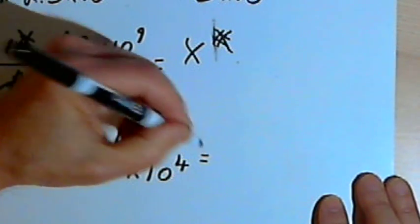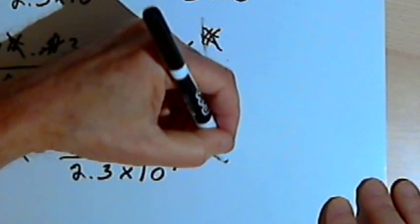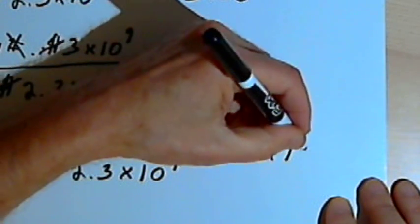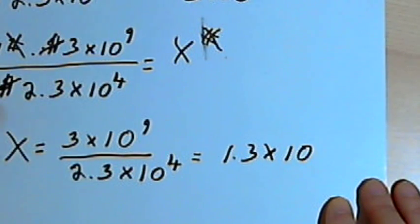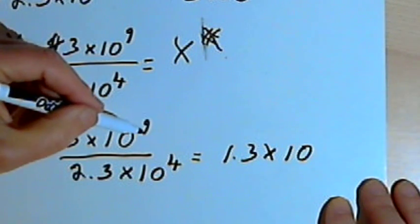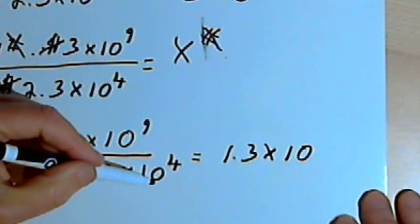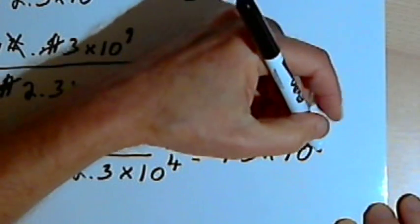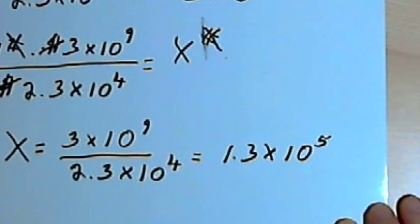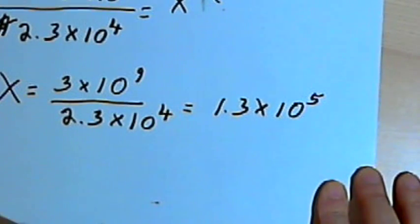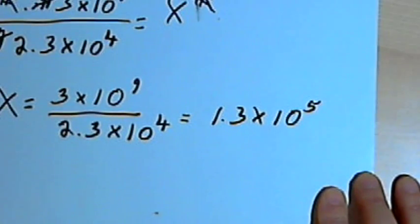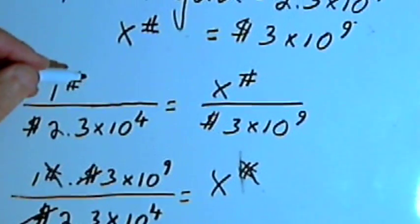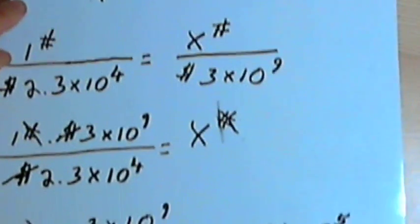So now I can take that fraction and turn that into 1.3 times some power of 10. And let's see, the power of 10 will be... I've got 10 to the ninth in the numerator, 10 to the fourth in the denominator. So I'll subtract that 4 from the 9 and get 10 to the fifth. So the weight of my gold, my 3 billion dollars worth of gold, is going to be 1.3 times 10 to the fifth. And the unit I was dealing with is pounds.